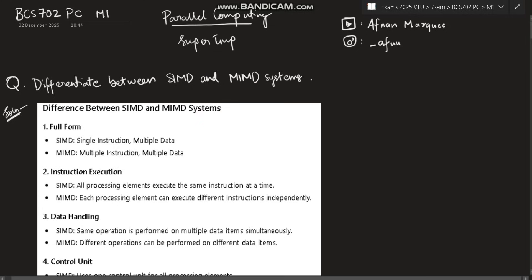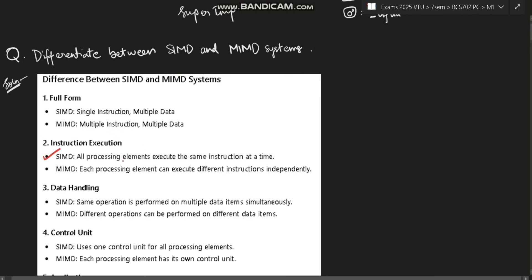The first question is differentiate between SIMD and MIMD systems. The subject parallel computing is all about instruction execution. SIMD means single instruction and multiple data - there is one instruction but there will be multiple data. The same instruction would be executed on different data sets. MIMD is multiple instruction multiple data, that means multiple instructions will be executed on multiple data.